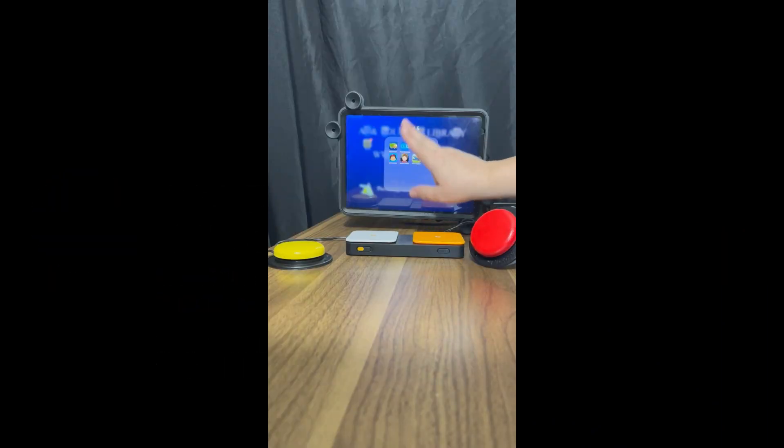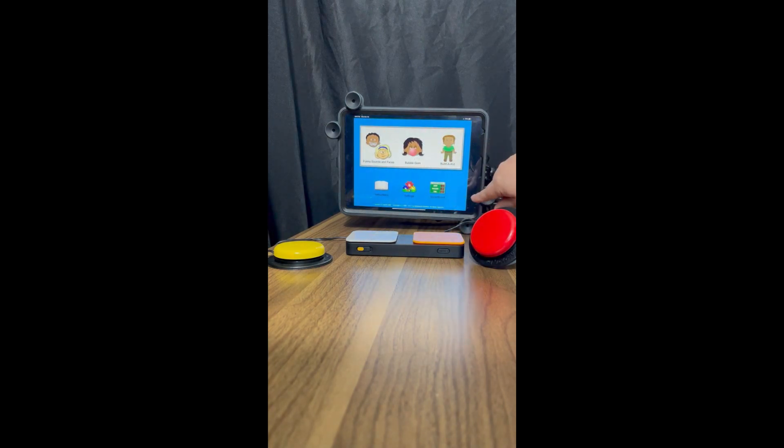We're going to utilize our Level 5 folder and we're going to select Switch Kids. This time we're going to select Build-A-Kid. I've already got my Bluetooth switch attached and when I activate my switch, I'm getting something on the screen.